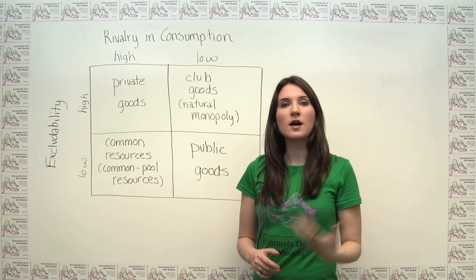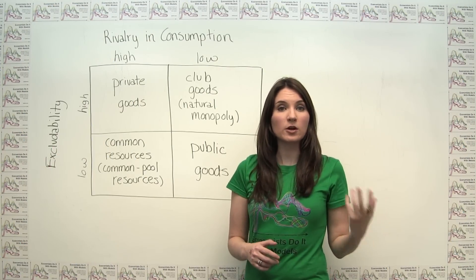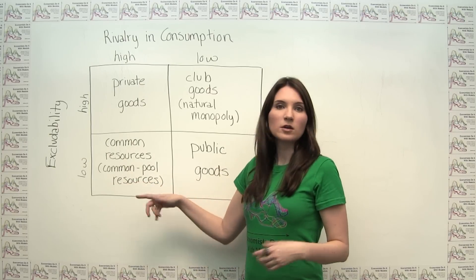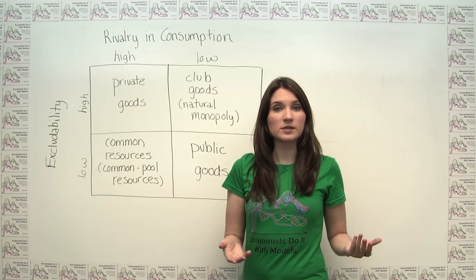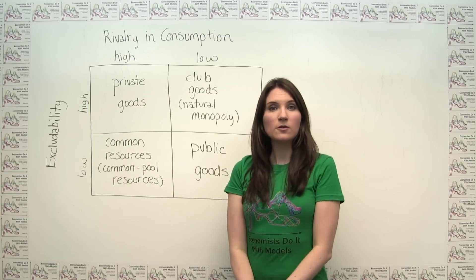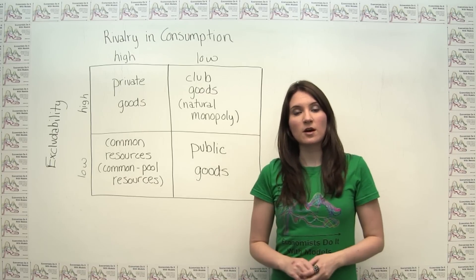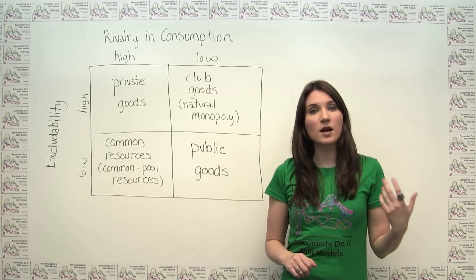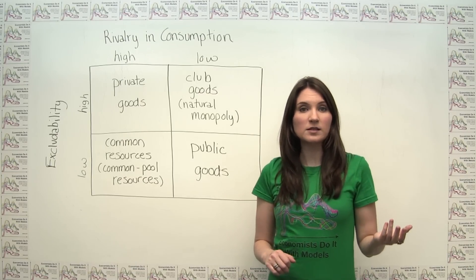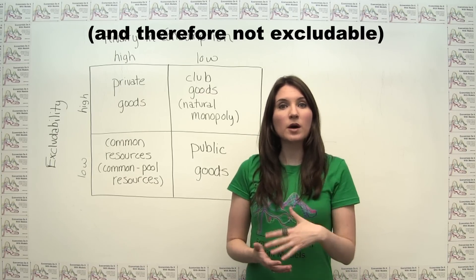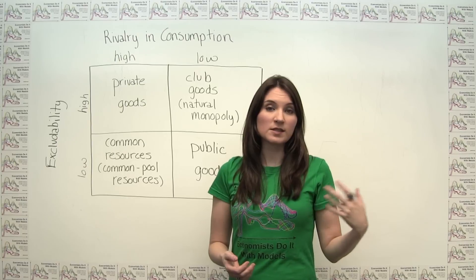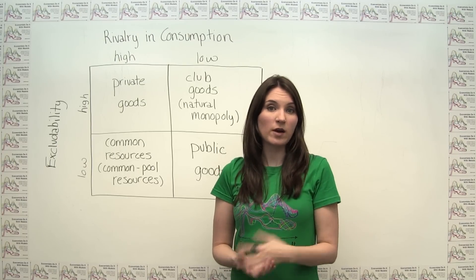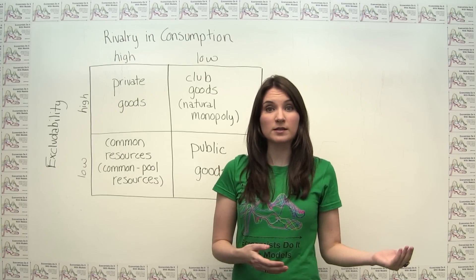Goods that are non-excludable but rival are called common resources, or common pool resources. For example, free clinics can be thought of as common resources, since they're not limited to paying customers, but one person using a service such as seeing a doctor makes it so other people have to wait in line and such.